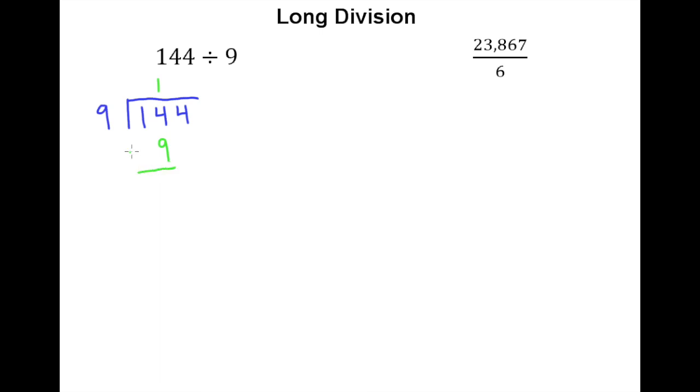We then create a little subtraction problem and take 9 away from 14, get a remainder of 5, and then we drop down the 4 in 144. We drop down that next digit. We then put 9 into 54, and 9 fits into 54. Hopefully you recognize 6 times, because 6 times 9 equals 54 is a special product. So we actually multiply those, put the product underneath, and subtract.